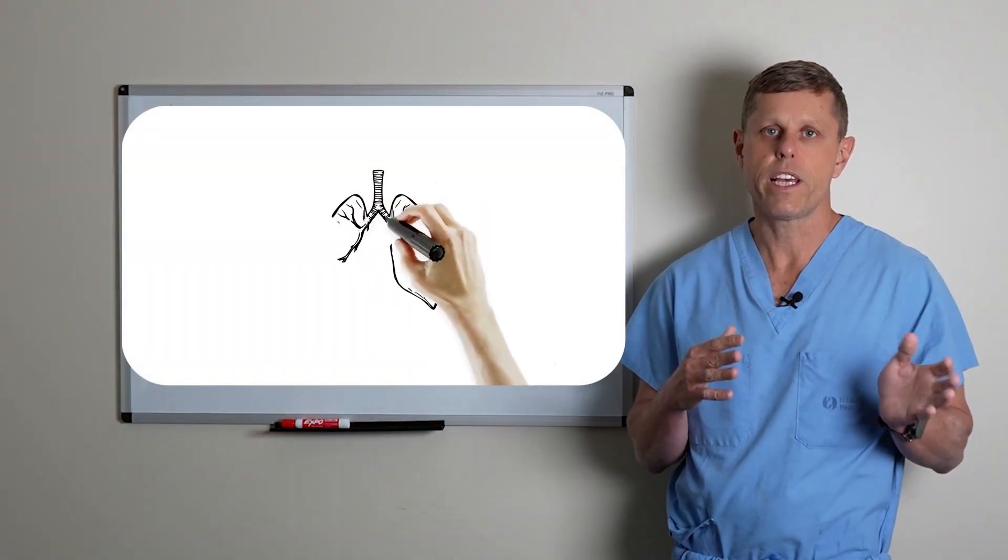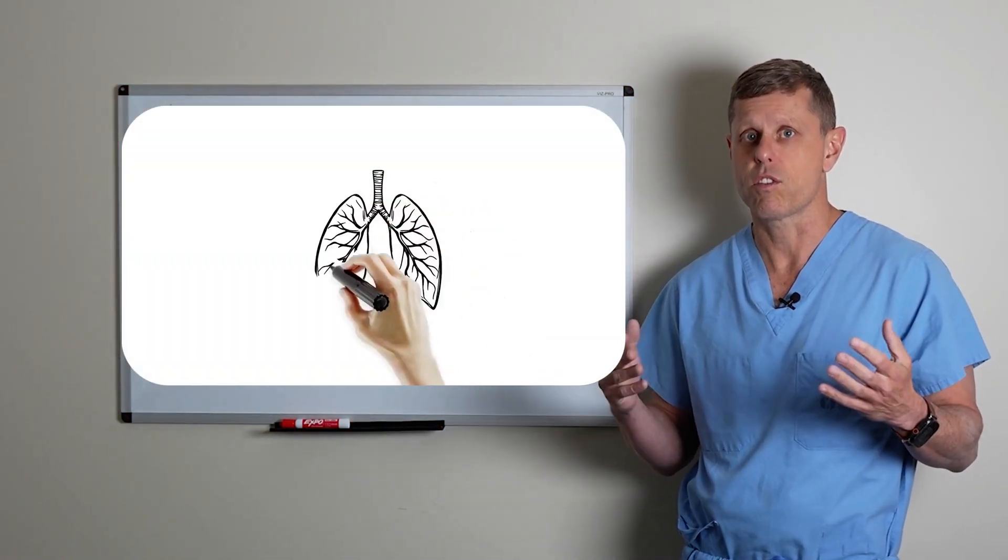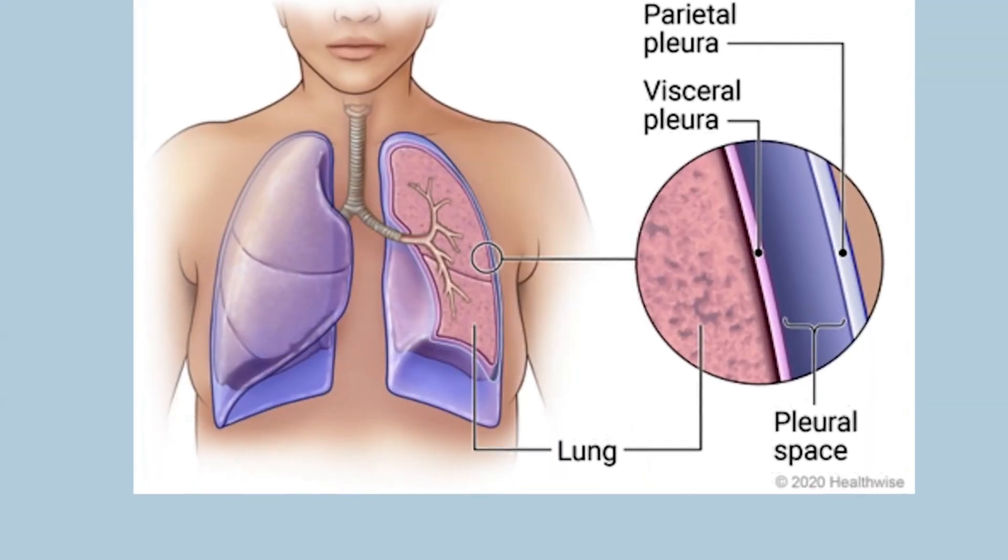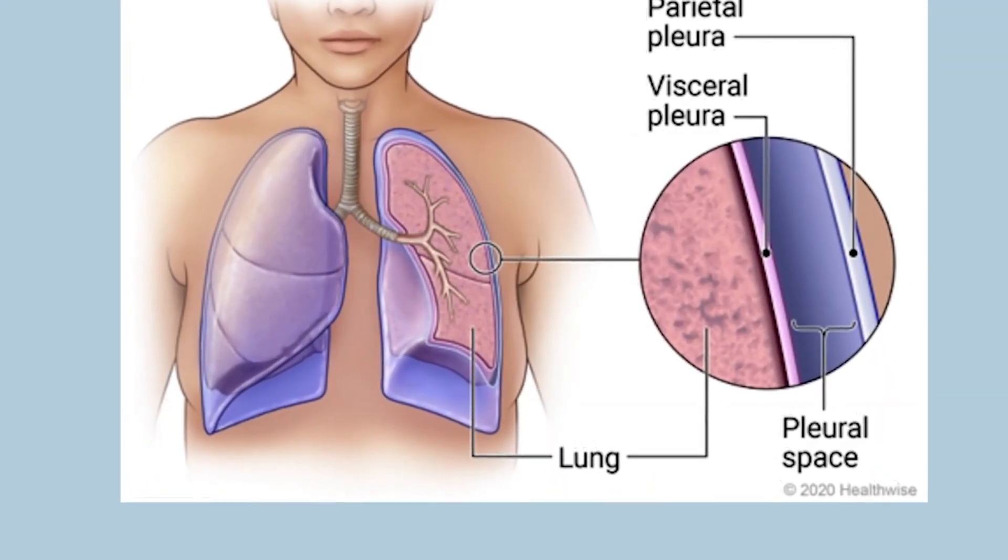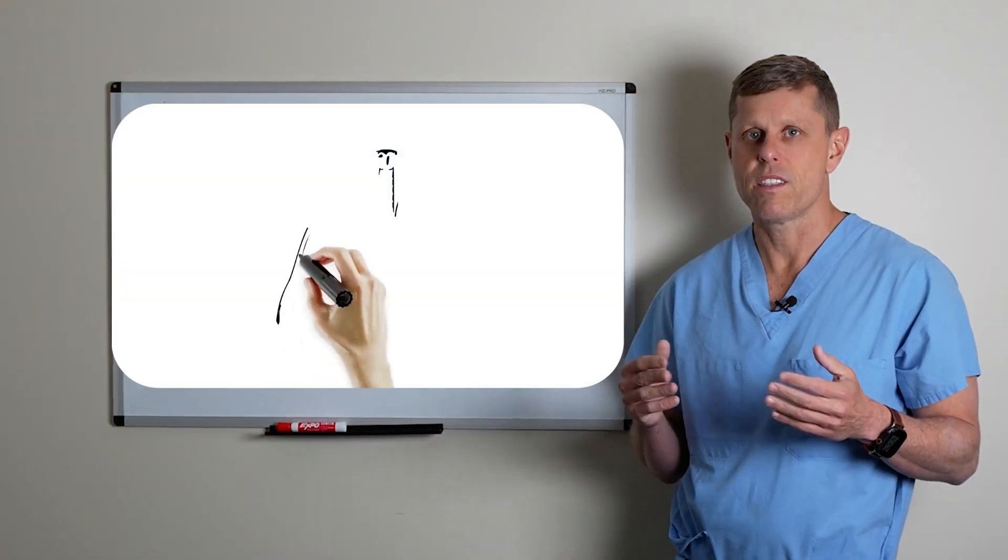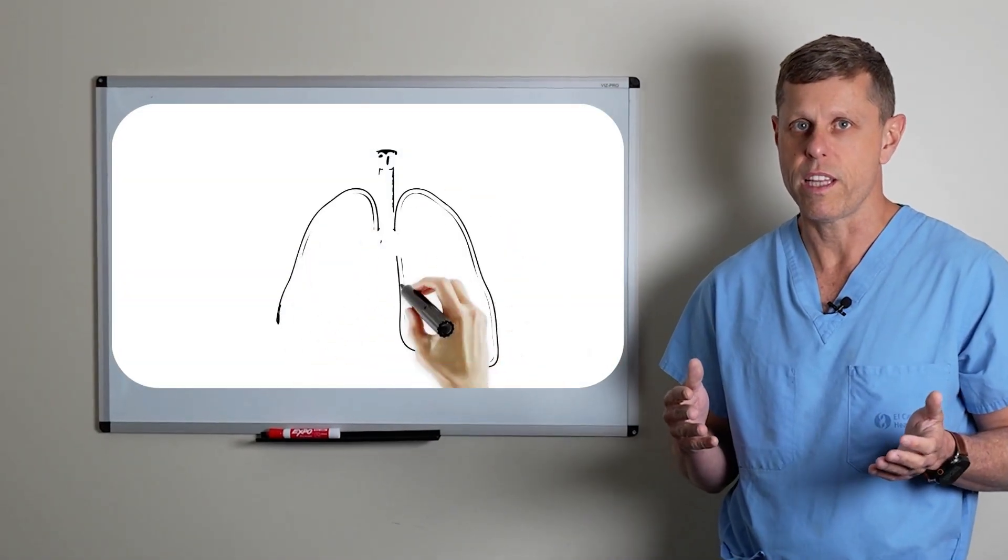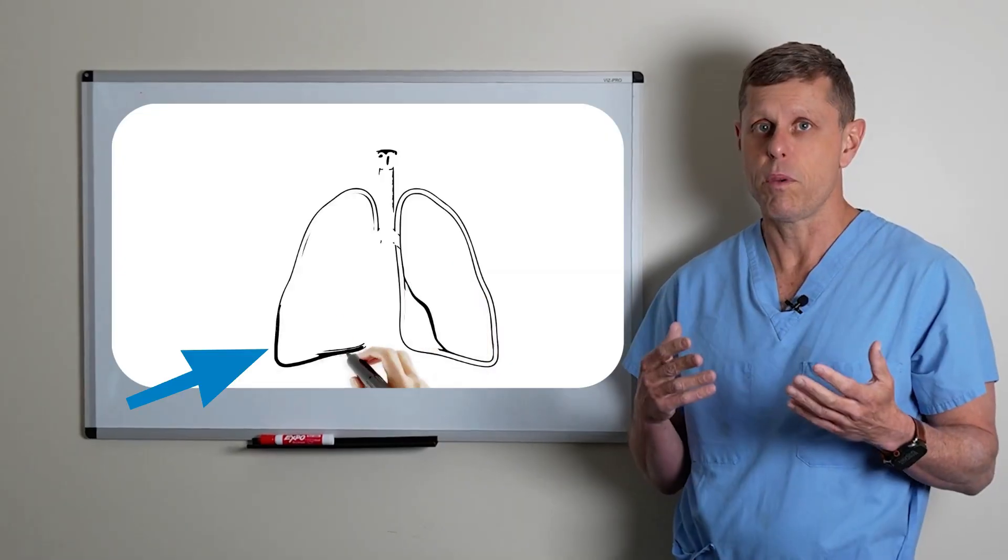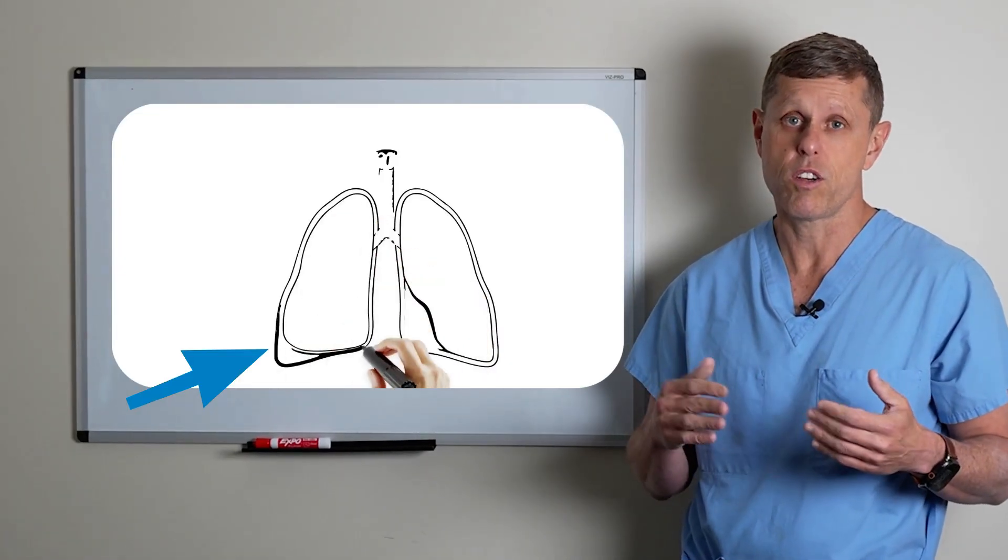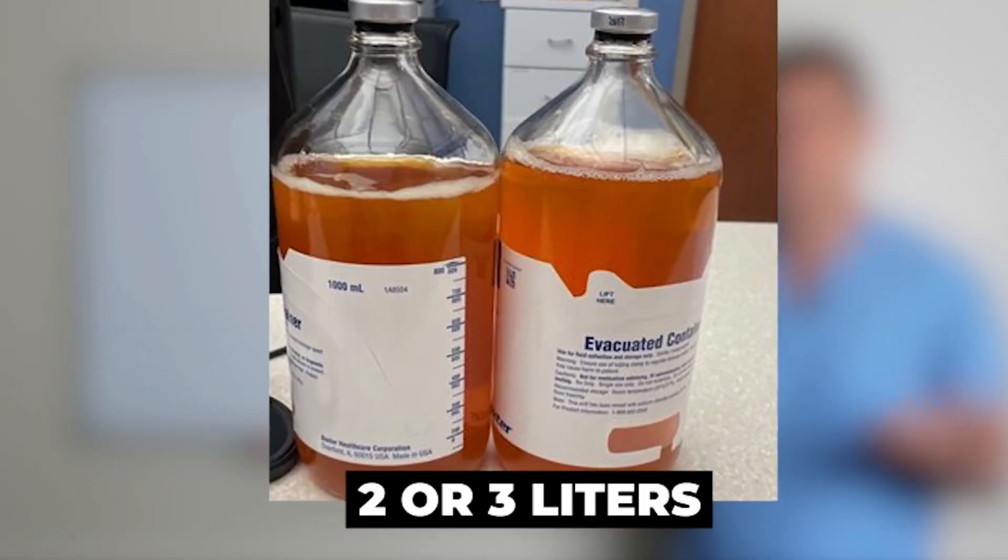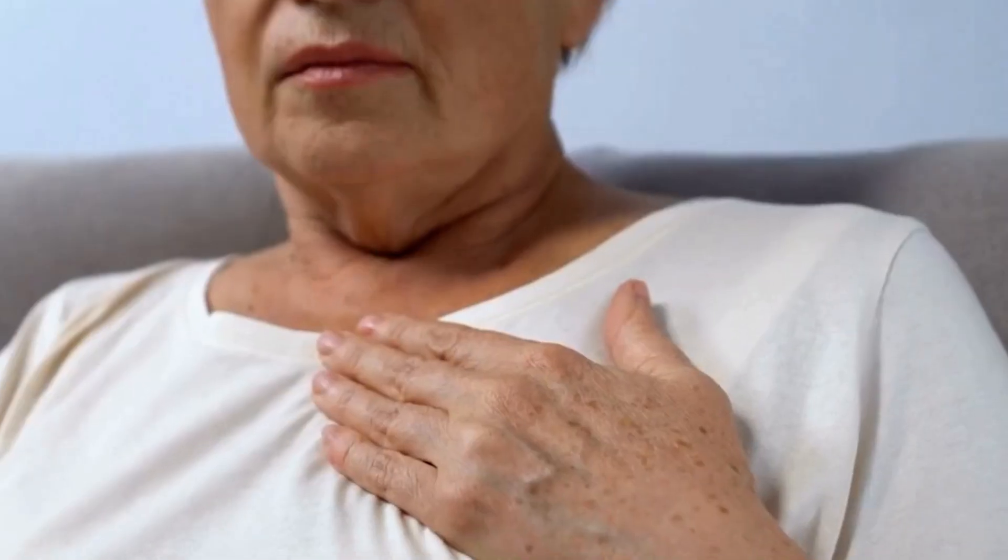Normally the lung is fully expanded and touching the chest wall, and you have a thin layer of fluid between the lung and the chest wall, like a little bit of oil to lubricate the movement. Normally there's only a few cc's of fluid in that space, but when fluid accumulates it could get up to two or three liters, and that will cause shortness of breath.